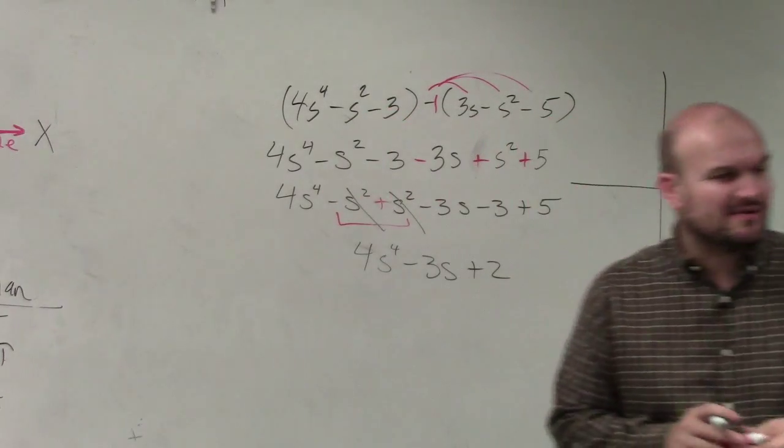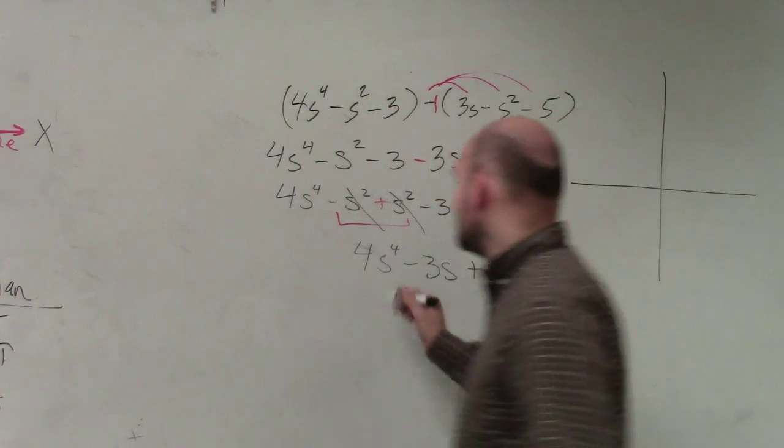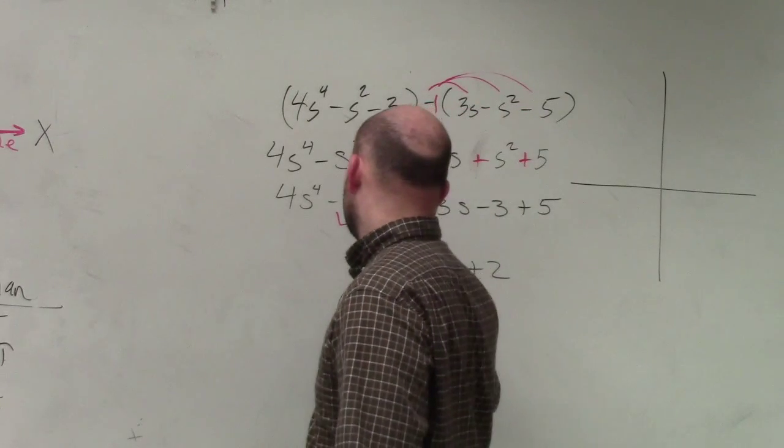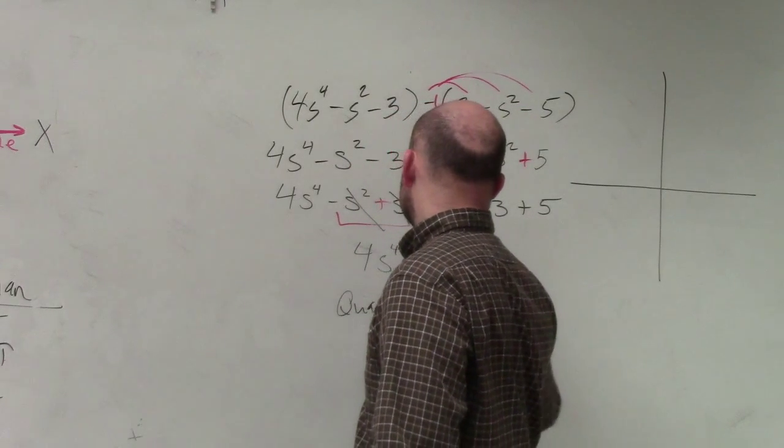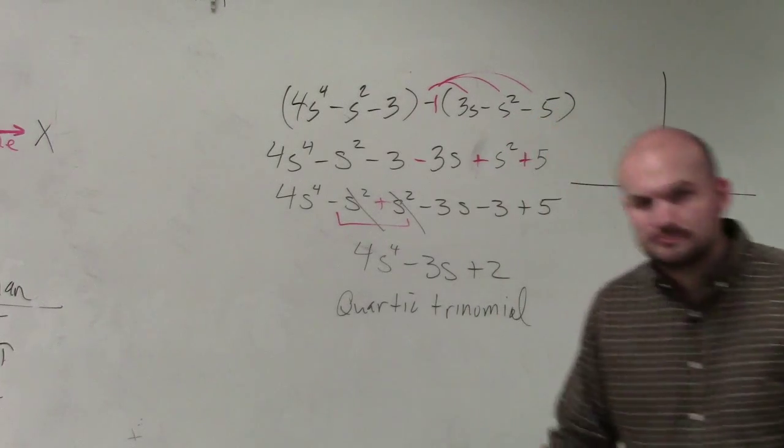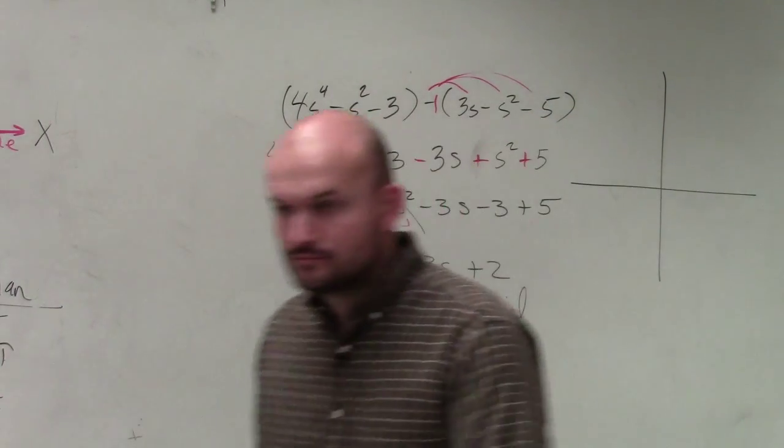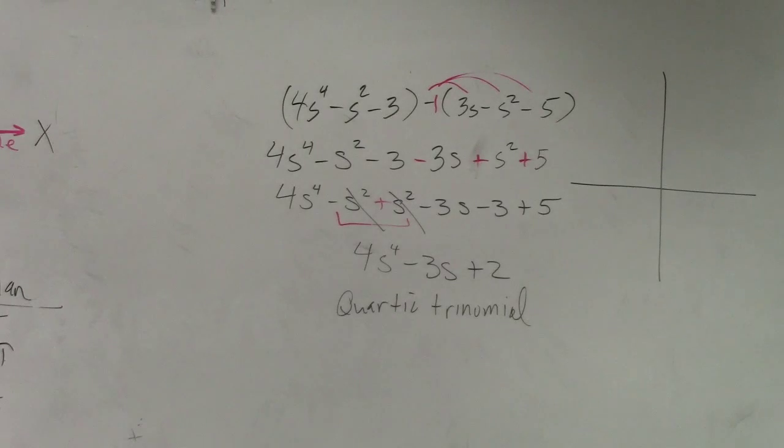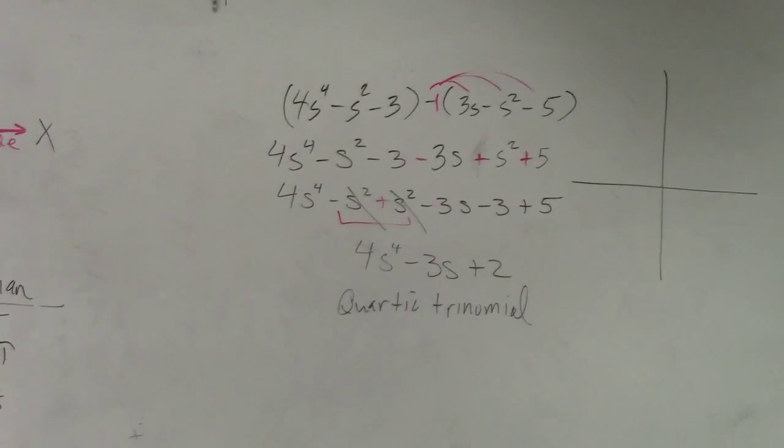And the rest is asking to classify, right? So if I was just going to classify, this is to the fourth power, so it's quartic. And then there's three terms, so it's a quartic trinomial. OK. Cool. And the degree of that one is 4.